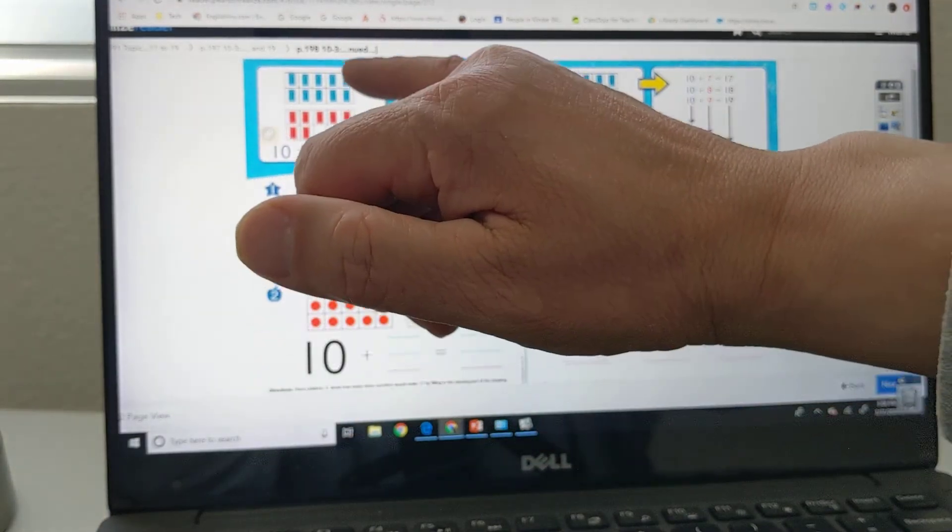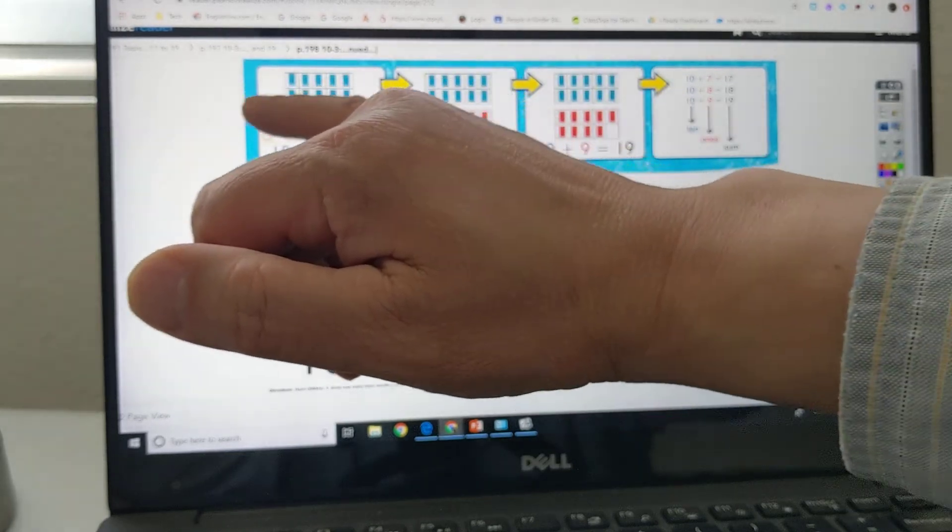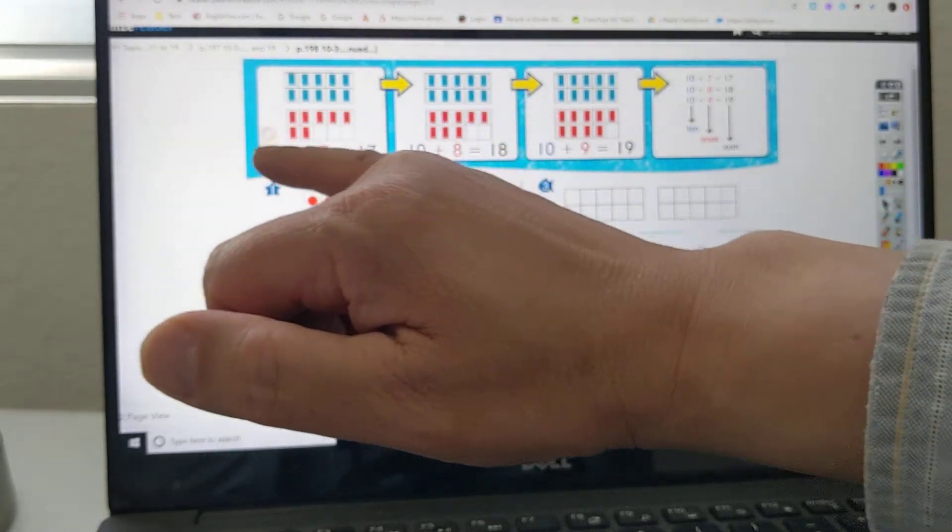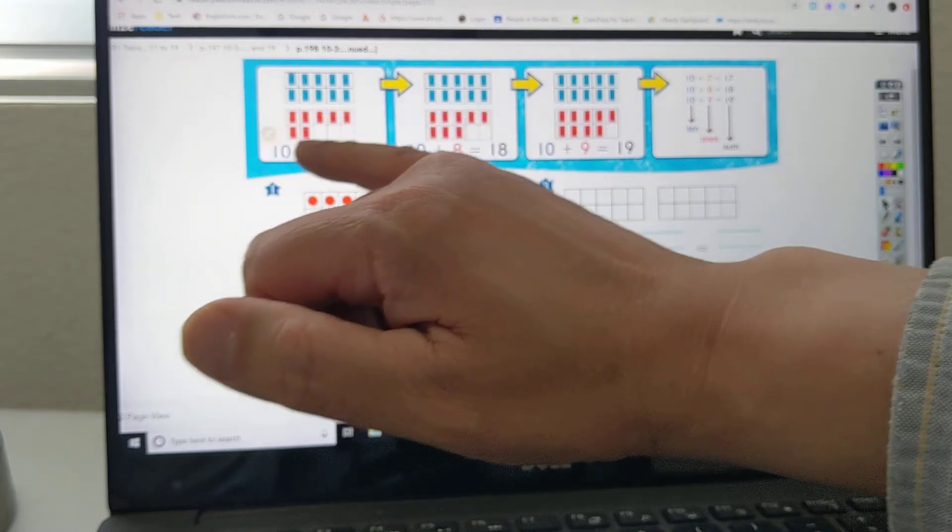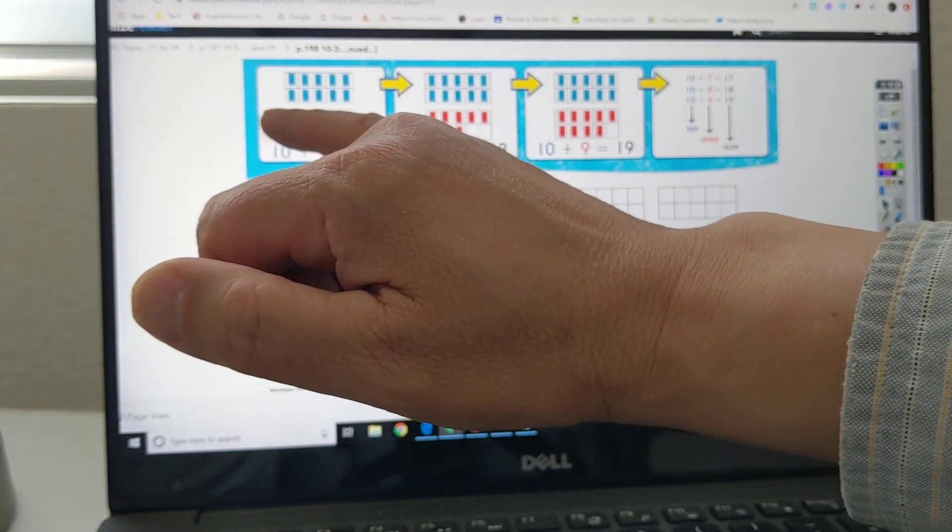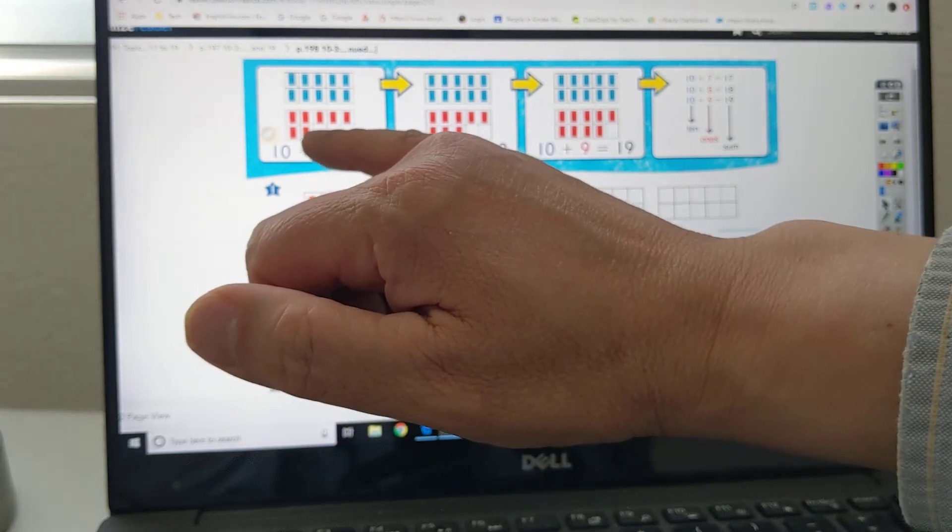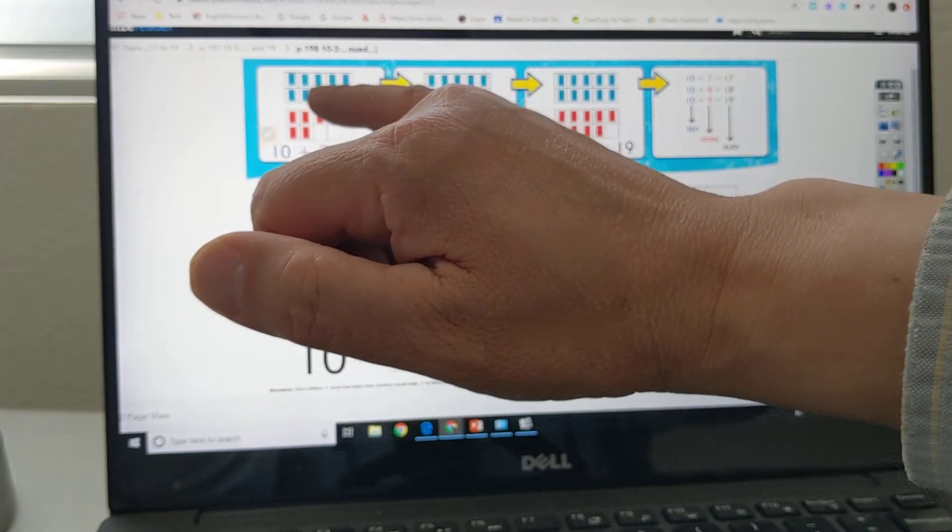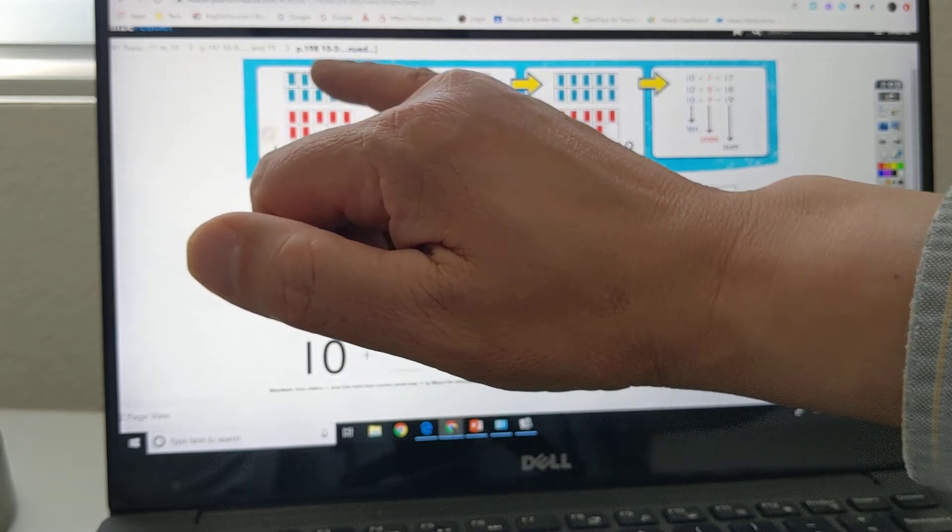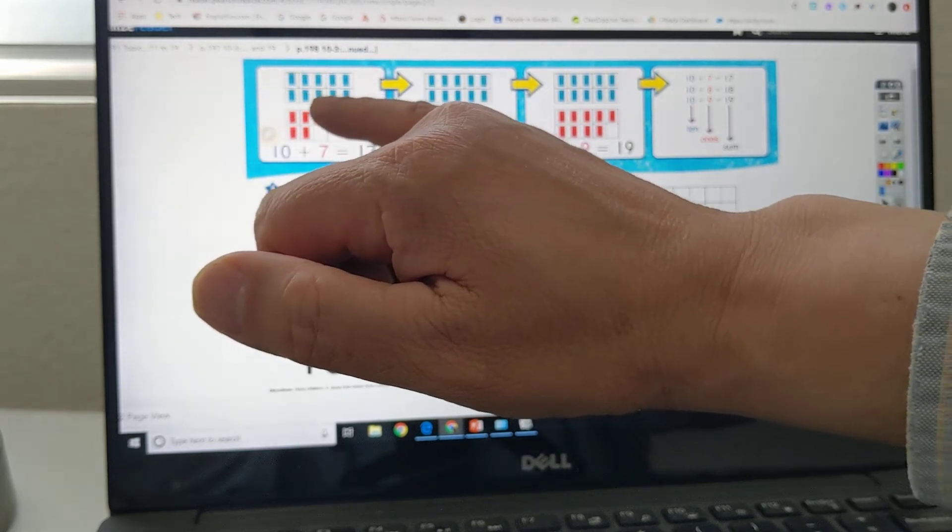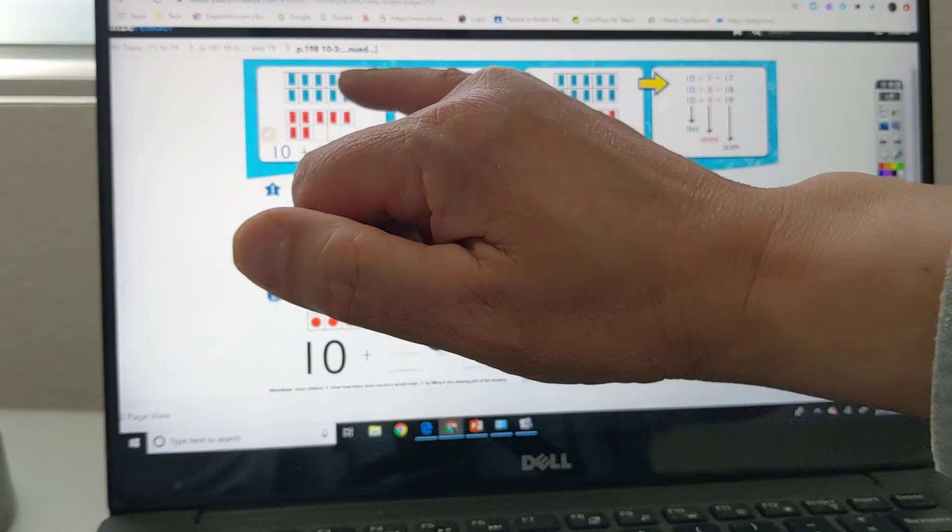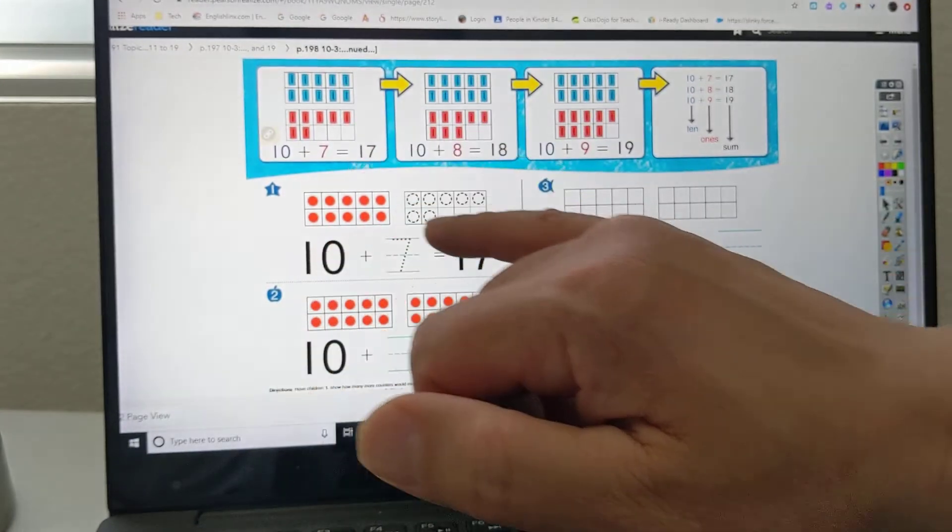So you have a picture of this. 10 plus 7 equals 17. So there's 10 objects there, plus 7 red objects. 10 plus 7. If you're not sure, you can count them. 1, 2, 3, 4, 5, 6, 7. Yep, there's 7 reds. How many blues? Should be 10. Let's count them. 1, 2, 3, 4, 5, 6, 7, 8, 9, 10. 10 plus 7 is equal to 17.